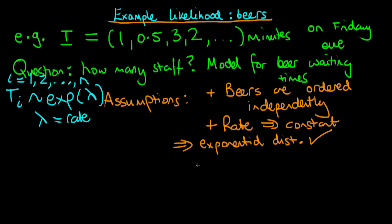What does the probability density function look like for an exponential distribution? Well, it looks like p(ti|lambda) equals lambda times e to the power minus lambda ti.